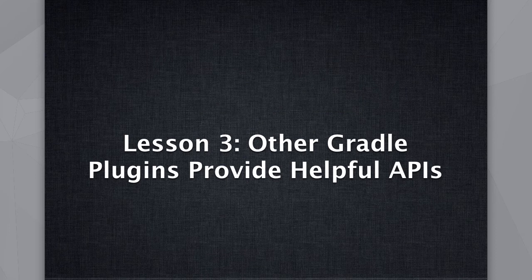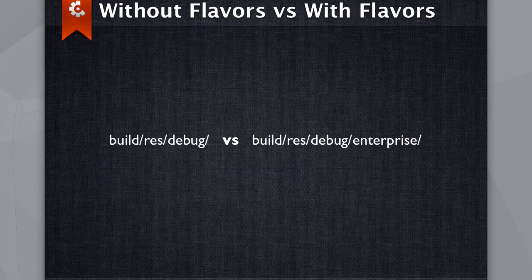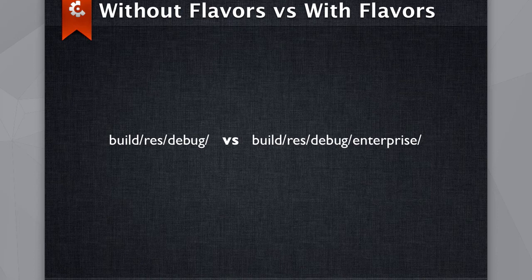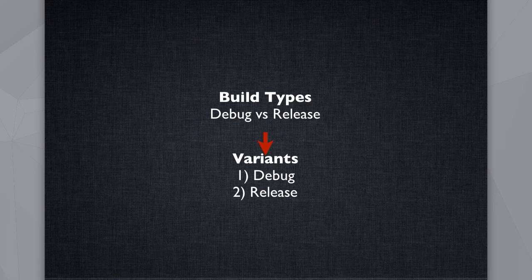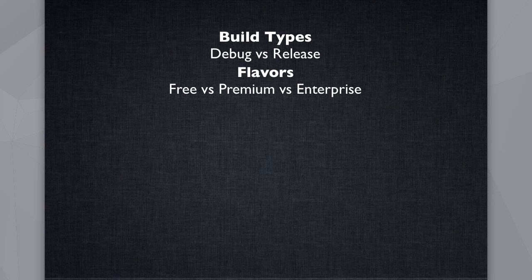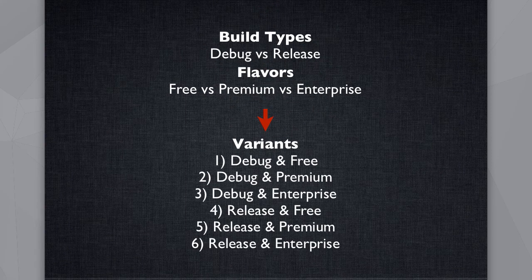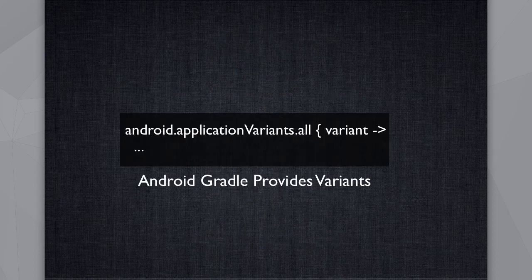Lesson three: other Gradle plugins provide helpful APIs. Without flavors and with flavors you get a different characteristic to your build — things are placed in different places. We wanted to insert a build ID. Without flavors there's a res/debug folder created; with flavors you might get something like res/debug/enterprise. We originally used strings to look in these folders, but that's a bad idea. The Android Gradle team pointed out there is this thing called variants. Without flavors there's a one-to-one mapping, and with flavors it enumerates over all combinations of build types and flavors. You can iterate over all of these and do something with each variant.